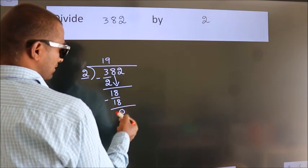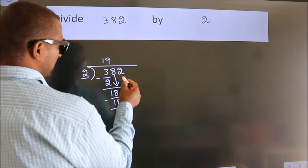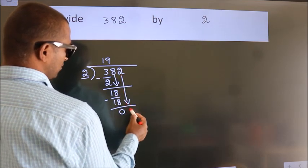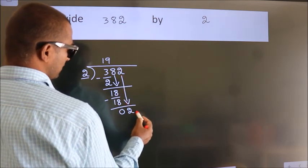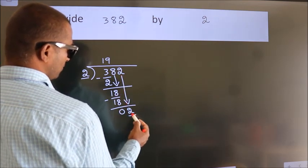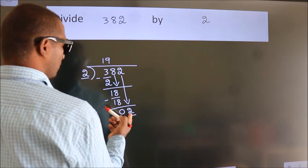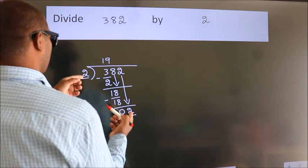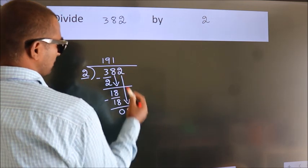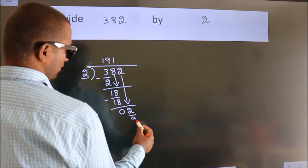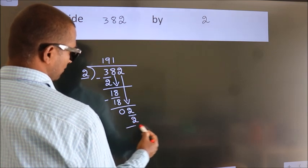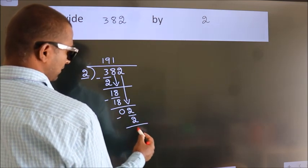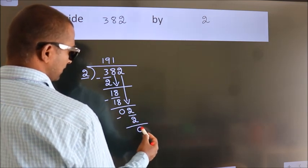After this, bring down the beside number. So, 2 down — so we get 2. When do we get 2 in the 2 table? 2 ones are 2. Now we subtract. We get 0.